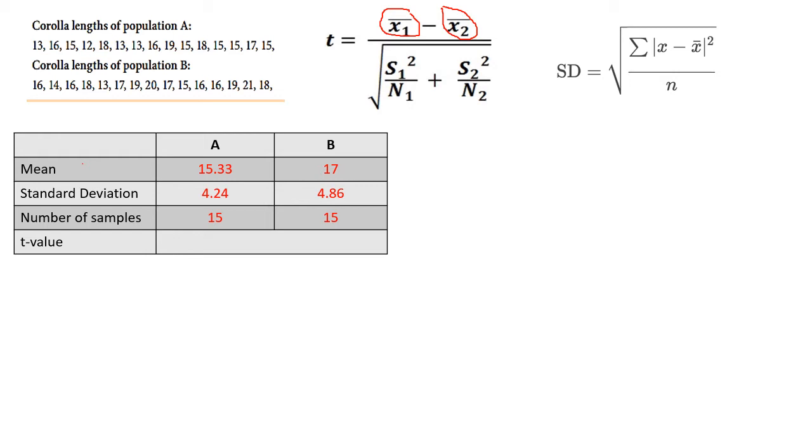The standard deviation is calculated by taking every individual point in the corollary length and deducting that value from the mean, squaring that value, adding up all the squared values for each of these data points, and dividing by the number of data points that you've got, then taking the square root. I'm just going to show you an example. I don't want us to spend all our time doing this because it can take quite a lot of time.